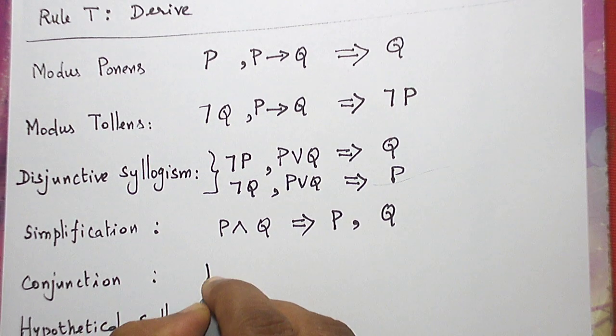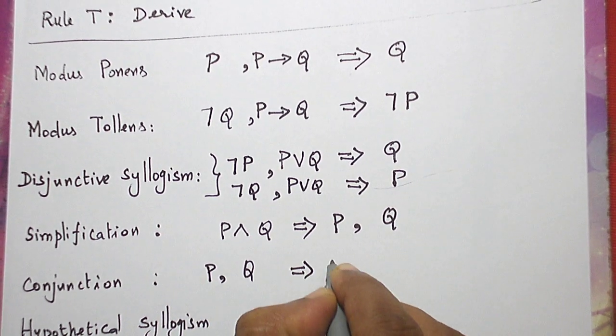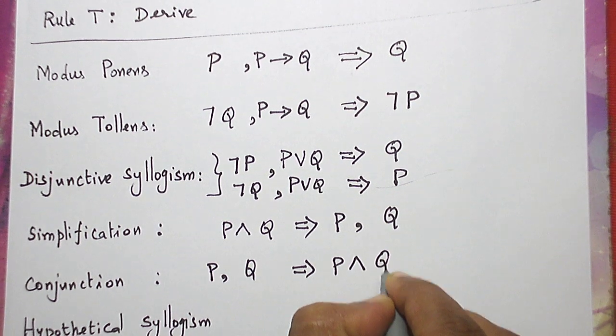Conjunction. Two statements, P and Q can be combined using a conjunctive connective, P and Q.